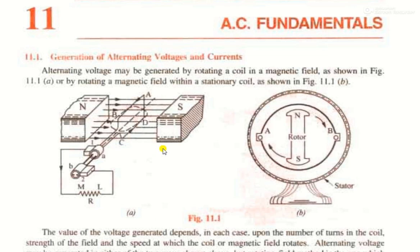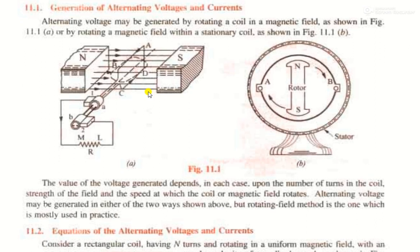The value of the generated voltage depends upon the number of turns in the coil, the strength of the magnetic field, and the speed at which the coil or magnetic field rotates with respect to each other. Alternating voltages may be generated in either of the two ways shown in figures A and B, but the rotating magnetic field — figure B — is the one most commonly used in practice.